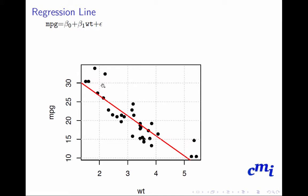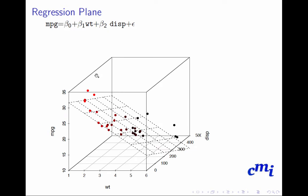Now if we consider, in addition to weight, displacement in our model, the dataset has another axis. So this is displacement, this is weight, and this is miles per gallon — effectively these three variables are sitting in a three-dimensional cube. When you fit this kind of model it is no longer a regression line; it is now a regression plane.